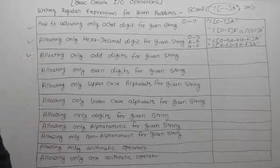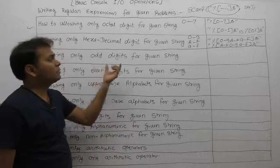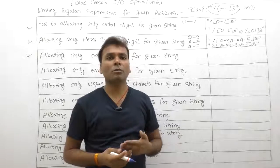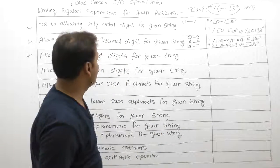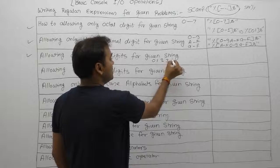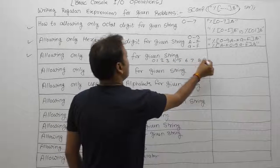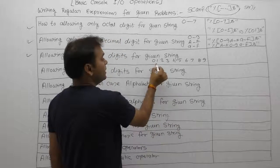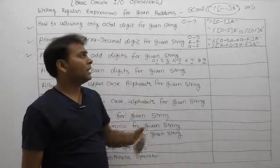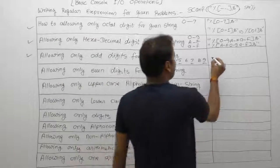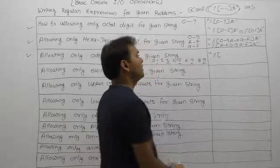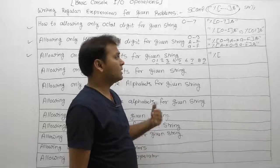Third problem: how to allow only odd digits for a given string. Suppose at runtime you want to read only an odd number of digits. The total digits are 0 through 9 — that is 10 digits. The odd digits out of these are only 1, 3, 5, 7, and 9. Only odd digits are permitted. The corresponding regular expression uses percent, opening square bracket.